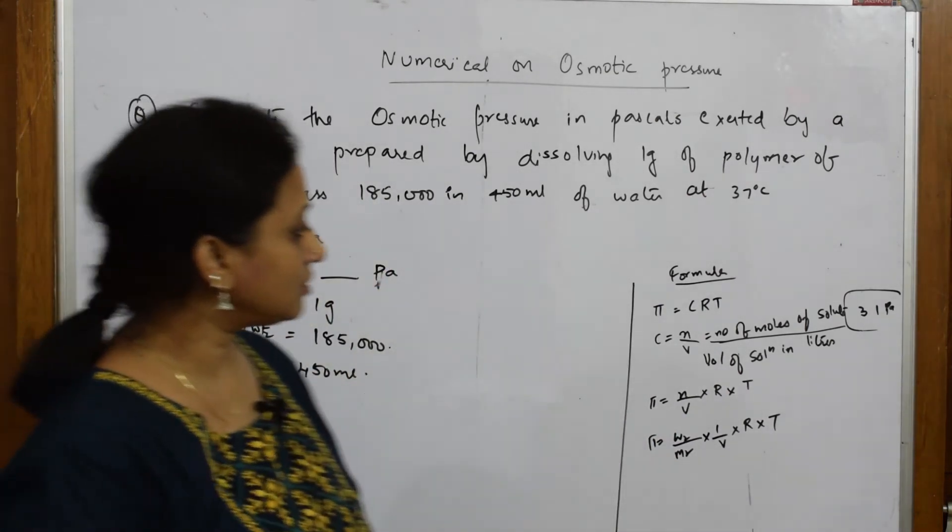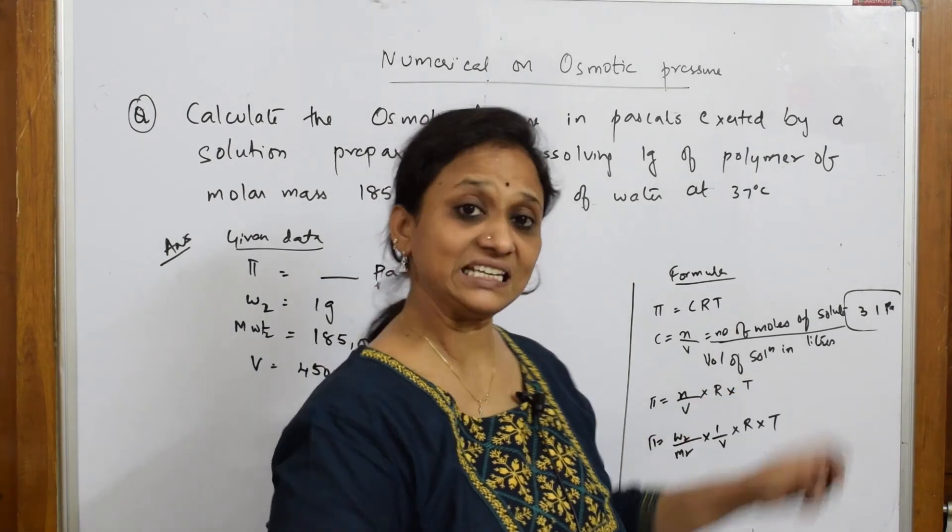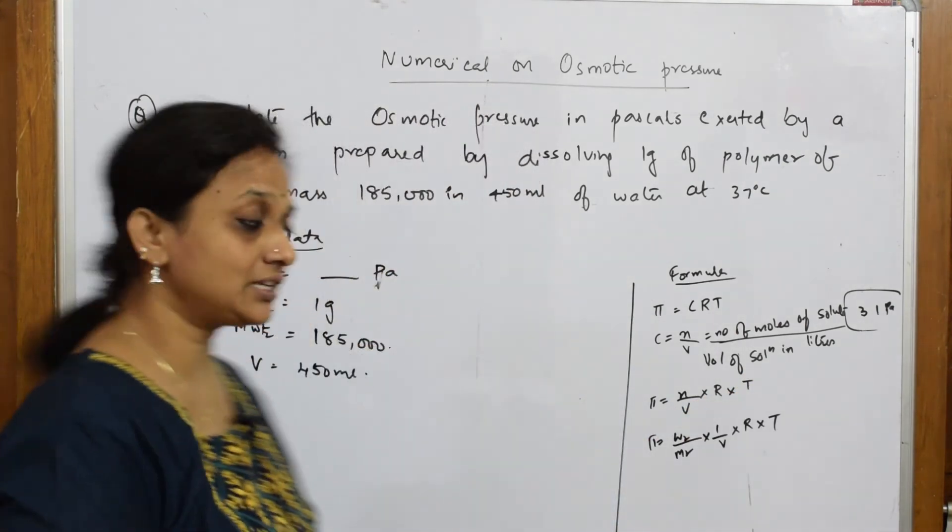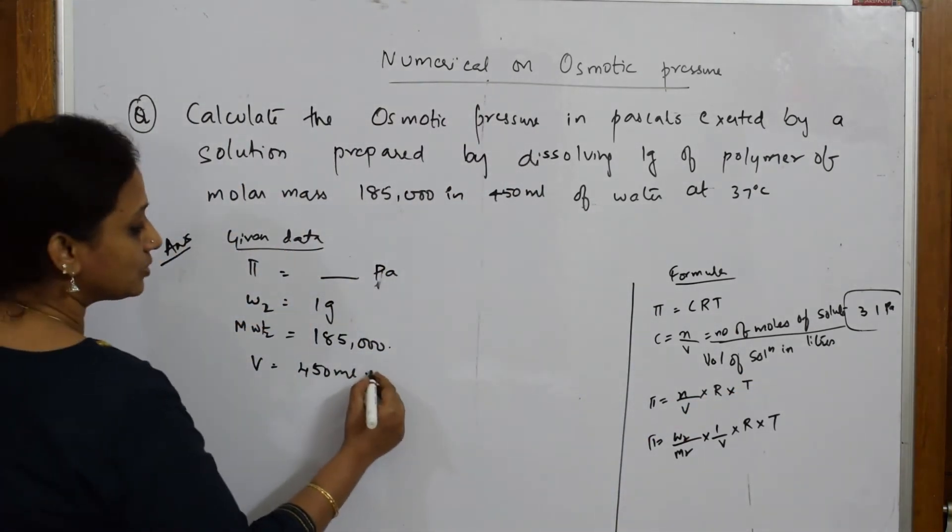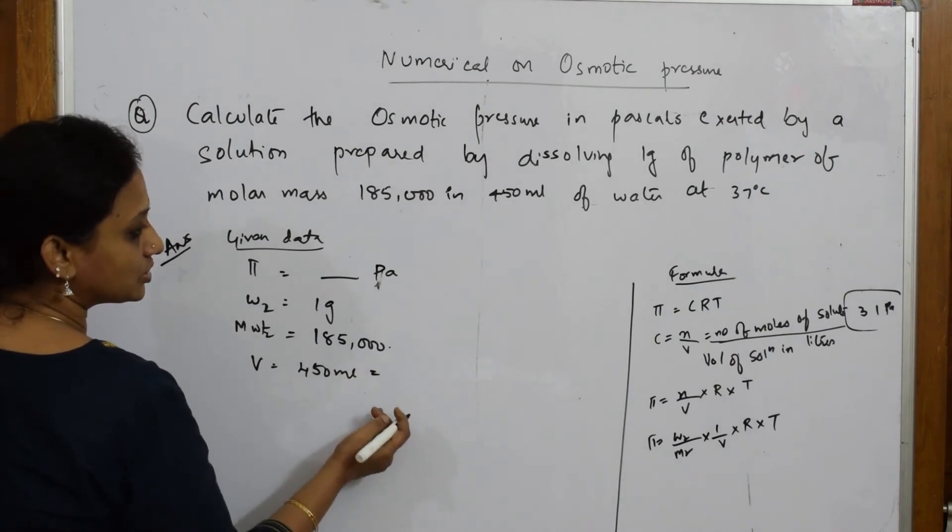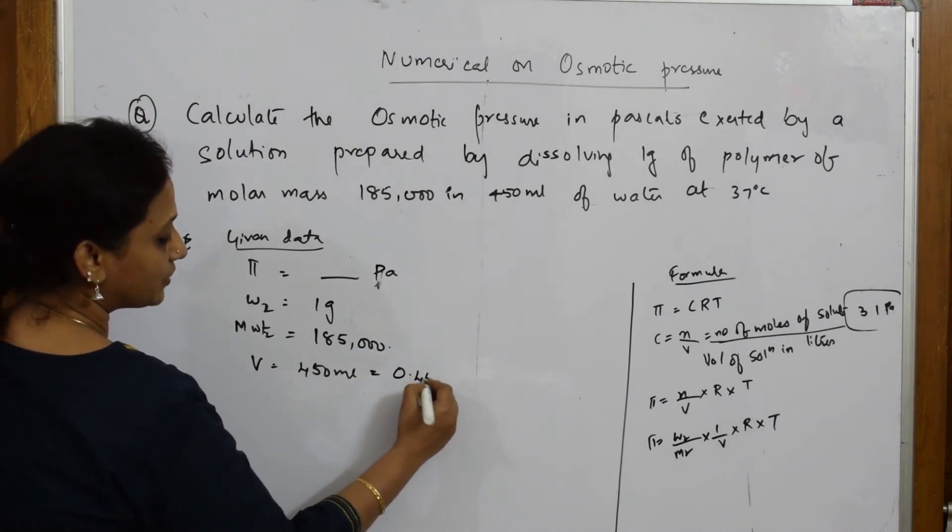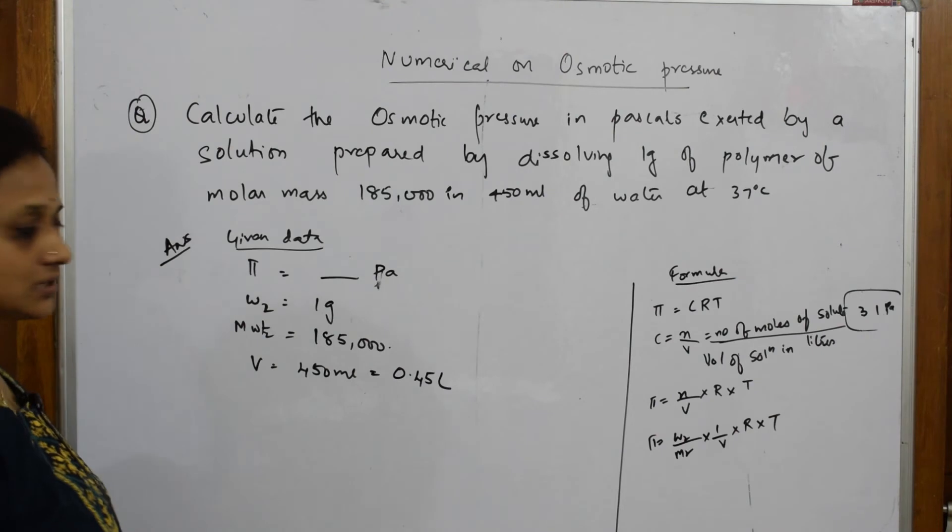But volume, here, volume of the solution in liters, they said. You have to be very careful. Here they have given ml. So convert this into liters that is nothing but 0.45 liters. Simple.